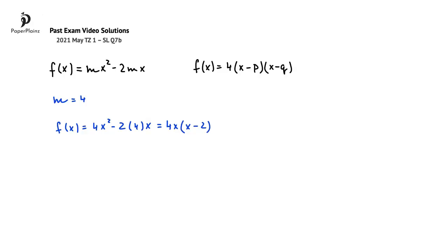For explanation's sake, I will go one step further here and write this as 4 times (x minus 0) times (x minus 2), and comparing this result with the other form that we have for f(x), we see that 0 corresponds to p and 2 corresponds to q.